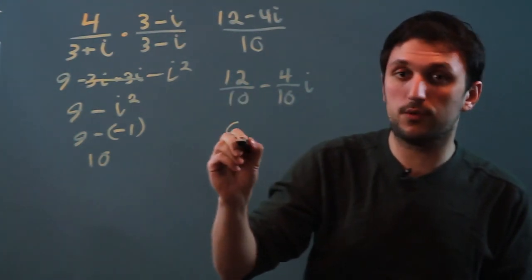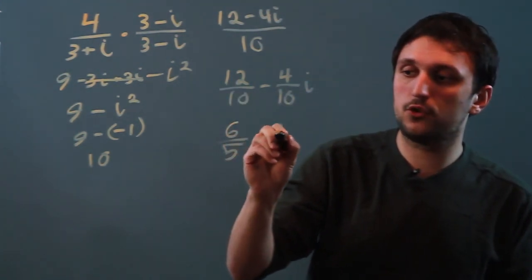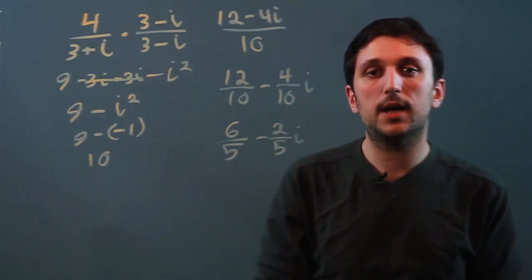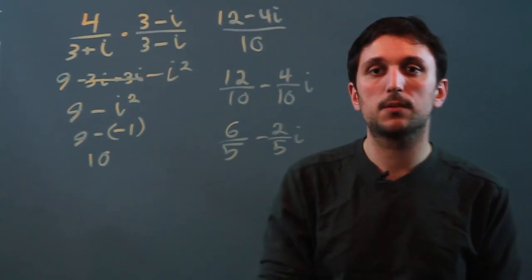So we can say 6 over 5 minus 2 fifths i. So I'm Charlie Kasov and you just learned how to divide polynomials with complex numbers. Thanks a lot.